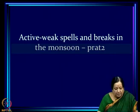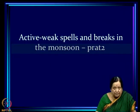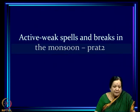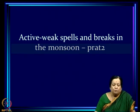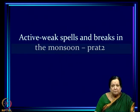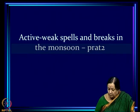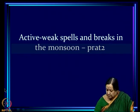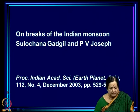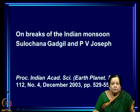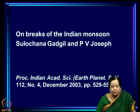We are discussing the fluctuations between active and weak spells within a monsoon season, and particularly the intense weak spells which are called breaks. What we looked at in the last lecture is how breaks have been defined traditionally and what their attributes are in terms of the patterns of pressure, wind, and rainfall. Now we start with a slightly different approach in trying to define breaks in terms of rainfall over the monsoon zone.